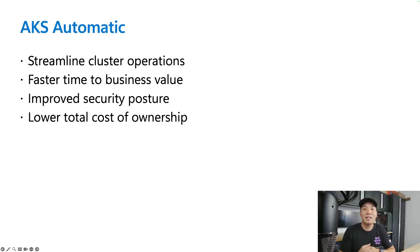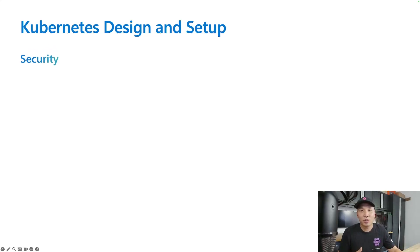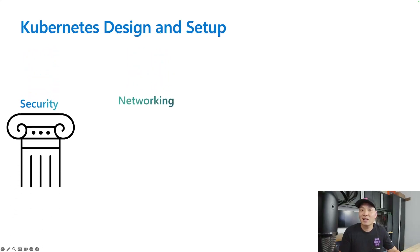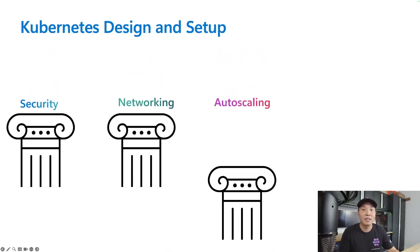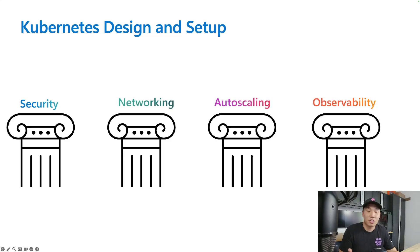Let's look at some of the things AKS Automatic will install by default and have pre-configured for you. When thinking about Kubernetes cluster design and setup, we look for best practices in security, networking, scaling, monitoring, and logging. These are the cross-cutting functional components that enable workloads to run in a highly efficient and secure manner. AKS Automatic enables many of these out of the box, so I like to look at it from the perspective of these cross-cutting concerns.